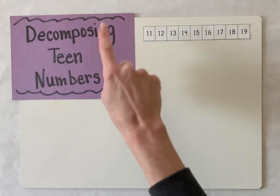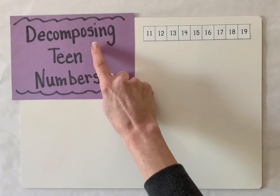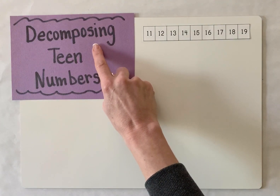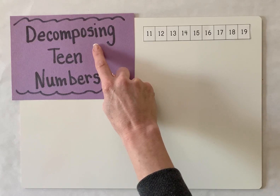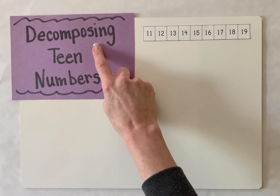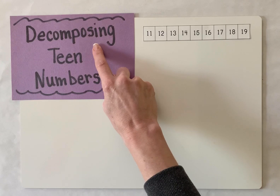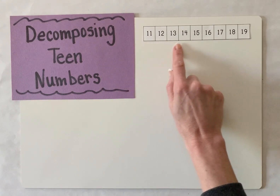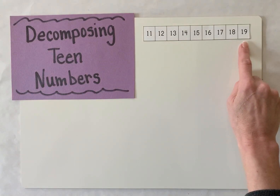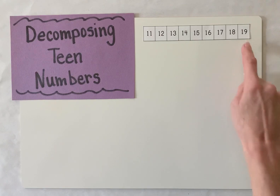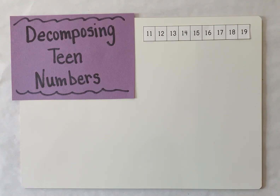Great job. Now, what does it mean to decompose a number? When we decompose a number, we break it down into parts. So today, we're going to break down our teen numbers into two parts, and we're going to do that using 10 frames and number bonds. So let's get started.